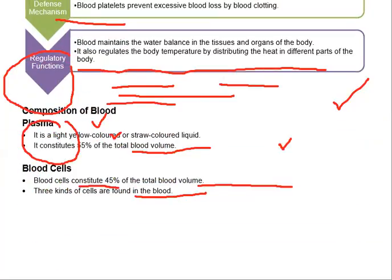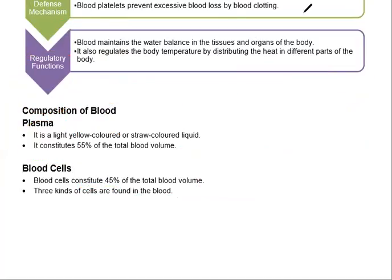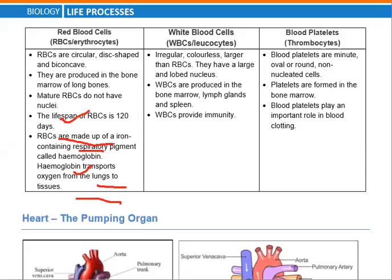Now, the composition of blood: blood is made up of plasma and blood cells. Plasma is a light yellow color and constitutes 55% of the total blood volume. Blood cells constitute 45% of the total volume. We have three kinds of blood cells: RBCs, WBCs, and platelets.